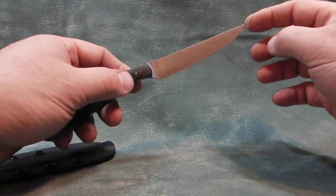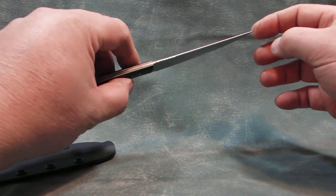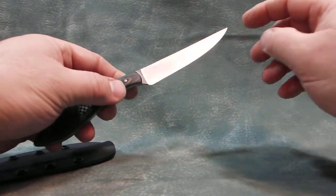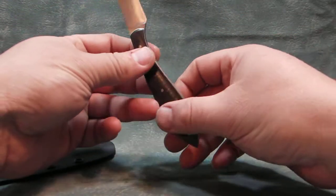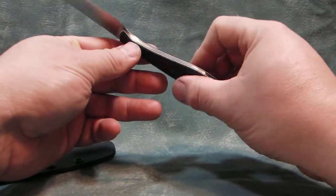It's flat ground from .075 stock, so it's real thin. It has a machine finish on the blade and is polished around the handle.